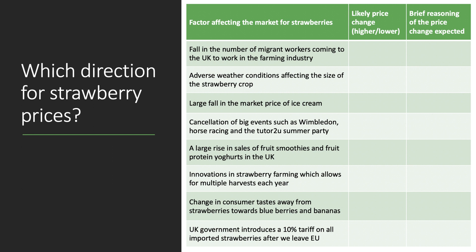Factor one: a fall in the number of migrant workers coming to the UK — for example from Bulgaria or Romania — to work in the farming industry. The likely effect is that prices will probably go up. Other things being equal, if you can't get the workers you need, that could lead to higher wages being offered, and even a supply shortage if you can't collect the crop. So higher wage costs and perhaps a reduction in the crop collected.